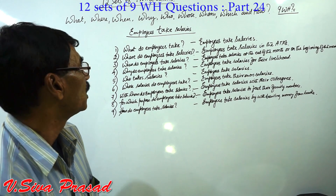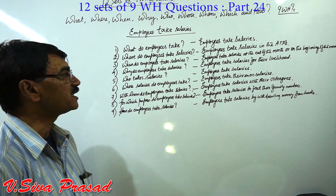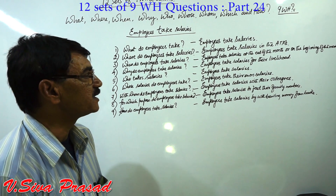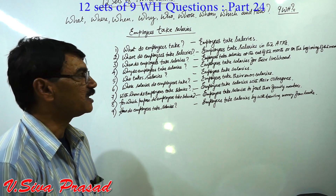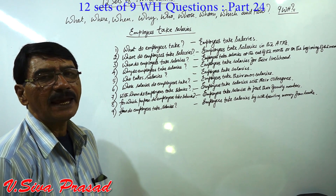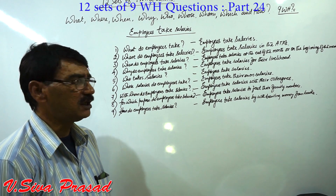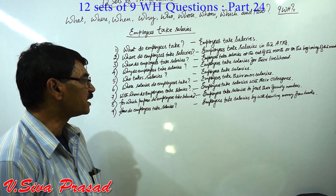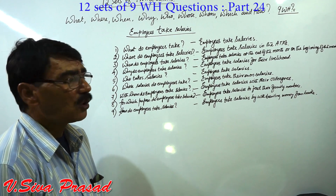Set 4 — Present Continuous: What are employees doing? Employees are taking their salaries. Where are employees taking salaries? Employees are taking salaries in the ATMs. When are employees taking salaries? Employees are taking salaries at the end of the month or at the beginning of the month. Why are employees taking salaries? Employees are taking salaries for their livelihood. Who is taking salaries? Employees are taking salaries. Whose salaries are employees taking? Employees are taking their own salaries. With whom are employees taking salaries? Employees are taking salaries with their colleagues. For which purpose are employees taking salaries? Employees are taking salaries to feed the family members. How are employees taking salaries? Employees are taking salaries by withdrawing money from the banks.